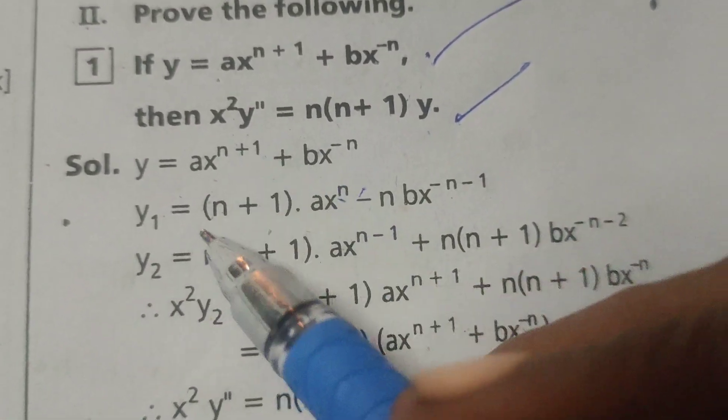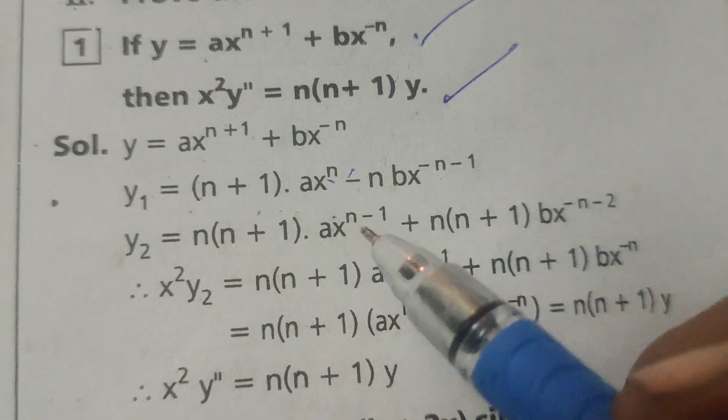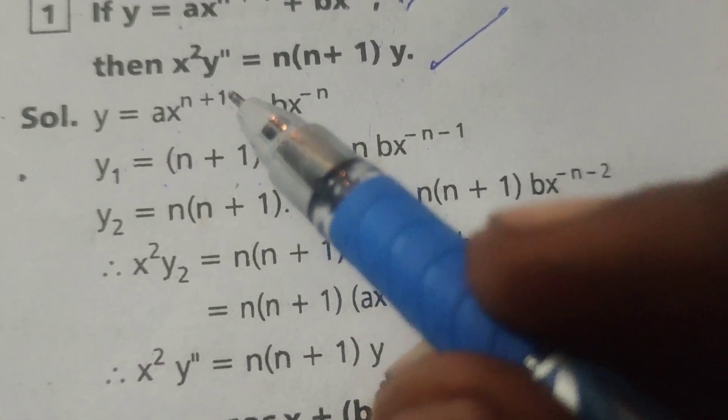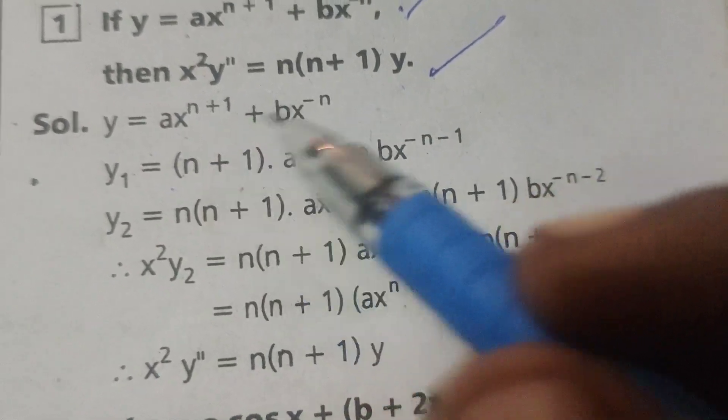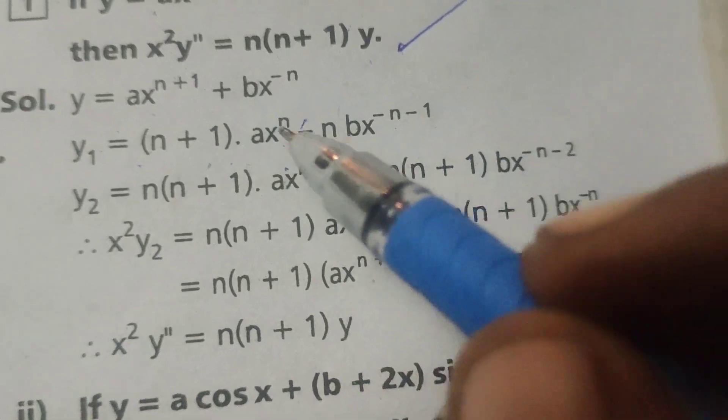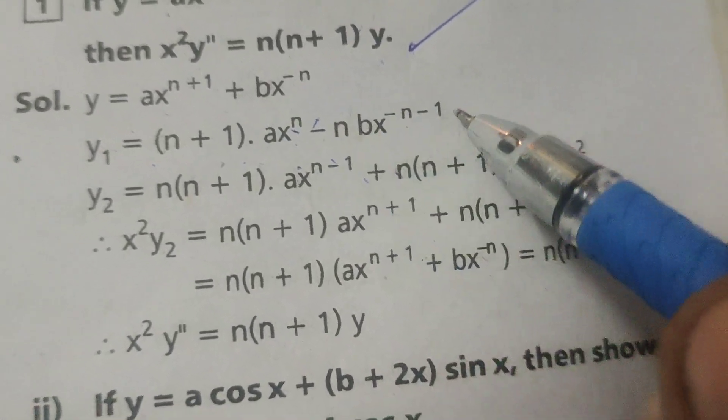Differentiating, y1 equals n plus 1 into a, a constant, x power n. Why? Because n plus 1 minus 1 gets cancelled. This is minus n into b into x power minus n minus 1.